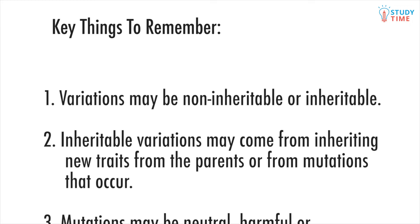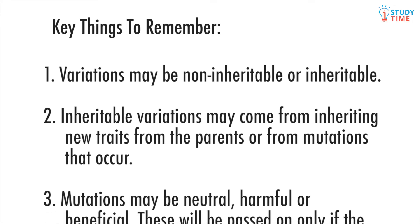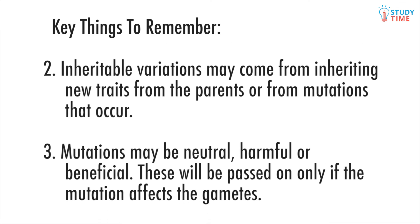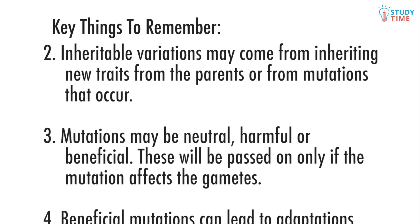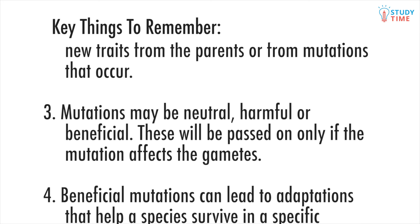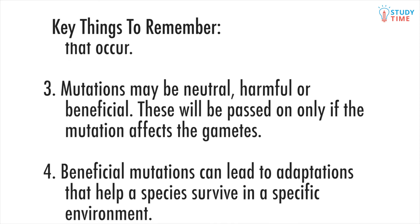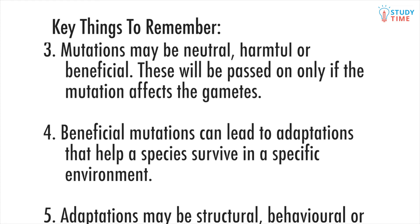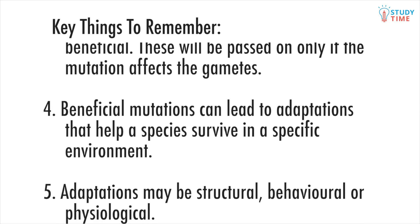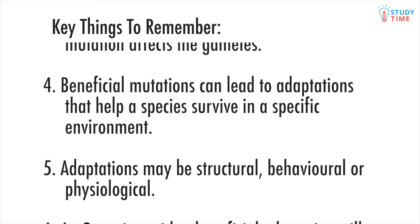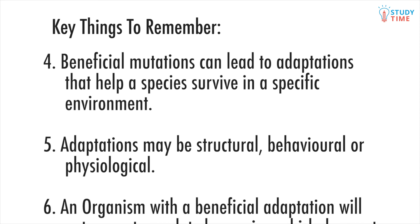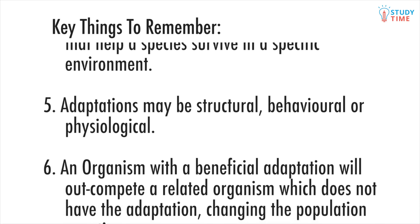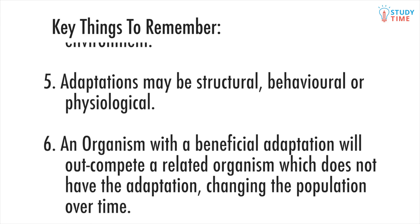Key things to remember: variations may be non-inheritable or inheritable. Inheritable variations may come from inheriting new traits from parents or from mutations. Mutations may be neutral, harmful, or beneficial, and will be passed on only if the mutation affects the gametes. Beneficial mutations can lead to adaptations that help a species survive in a specific environment. Adaptations may be structural, behavioral, or physiological. An organism with a beneficial adaptation will outcompete a related organism which does not, changing the population over time.